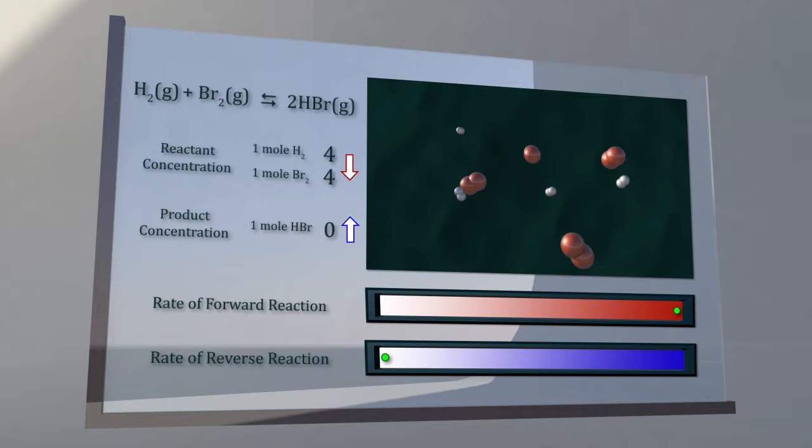the reverse reaction of hydrogen bromide gas producing hydrogen and bromine gas begins to take place as well.